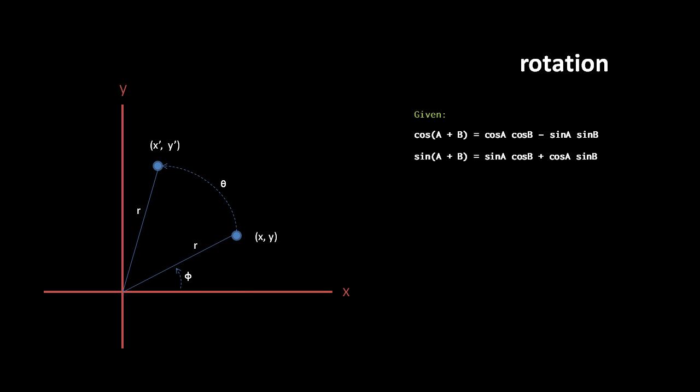Now actually, the formula we just derived is not commonly used because there's a more efficient formula. The efficient formula starts with similar reasoning, but takes advantage of the trigonometric identity for the cosine and sine of two angles summed together. According to a proof we won't go over here, the cosine of two angles a and b added together equals the cosine of a times the cosine of b minus the sine of a times the sine of b. Similarly, the sine of a plus b equals the sine of a times the cosine of b plus the cosine of a times the sine of b.